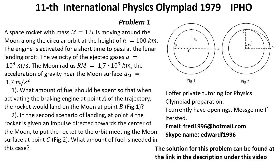Problem number 1. A space rocket with mass m equal 12 ton is moving around the moon along the circular orbit at the height of h equal 100 km. The engine is activated for a short time to pass the lunar landing orbit. The velocity of the ejected gases U equal 10 to the power 4 meters per second. The moon radius rm equal 1.7 multiplied by 10 to the power 3 kilometers. The acceleration of gravity near the moon surface gm equal 1.7 meters per second squared.